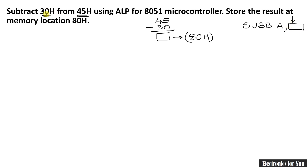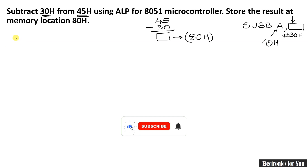Our number to be subtracted is 30H, and therefore it should be at 30H. Sorry — it is a number, that is hash 30H. So first you have to store 45H into the accumulator. Therefore, I am writing a program which has two numbers 30H and 45H, and we have to use immediate addressing mode. So the first instruction will be MOV.